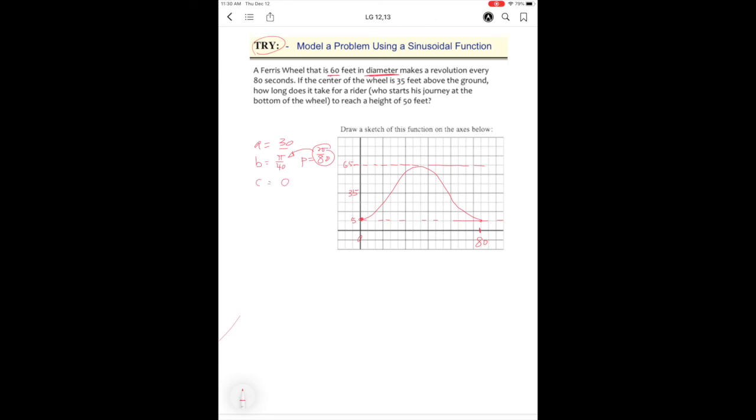The c is zero because again it's going to be a negative cosine, and the d is 35, so the answer you should get is this.